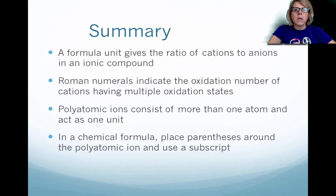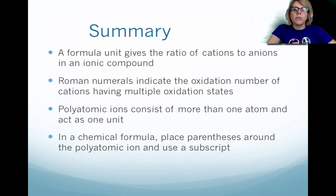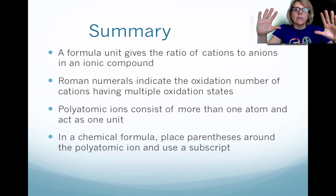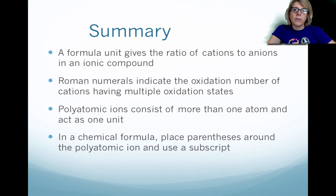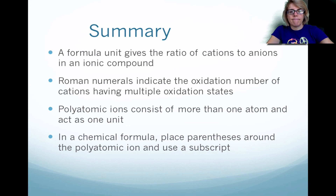In summary: we look at the ratio of cations to anions to figure out the net neutral ionic charge of a compound. You use Roman numerals when there are different oxidation states for cations. Polyatomic ions consist of two or more atoms that act as a unit together, and we use parentheses to keep that together. And lastly, we include a subscript if it's needed.